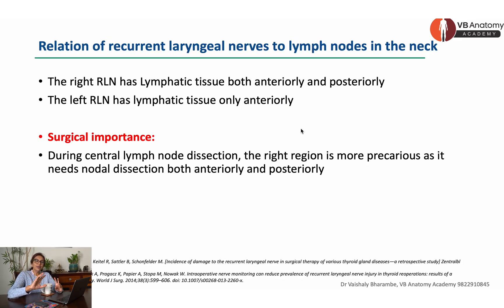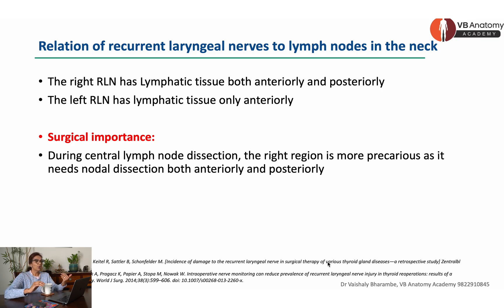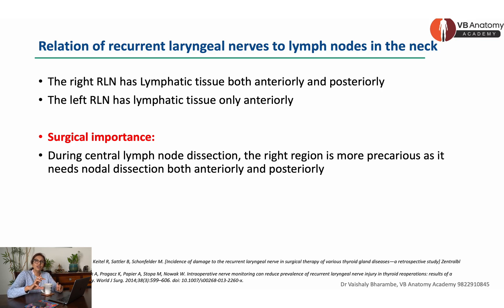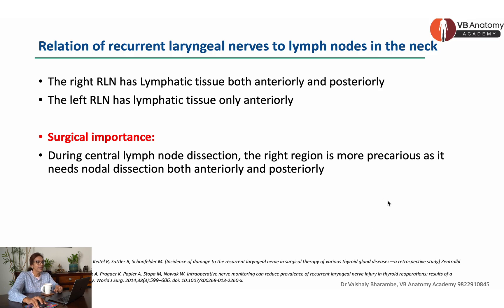There is also a relation of the recurrent laryngeal nerve to lymph nodes. On the right side, the recurrent laryngeal nerve has lymphatic tissue both anteriorly and posteriorly. On the left side, it has lymphatic tissue only anteriorly. The surgical importance is that during central lymph node dissection, the right region is more precarious to dissect because it requires dissection both anteriorly and posteriorly.